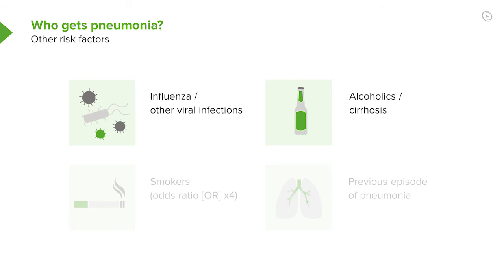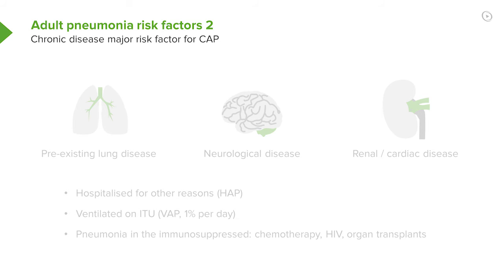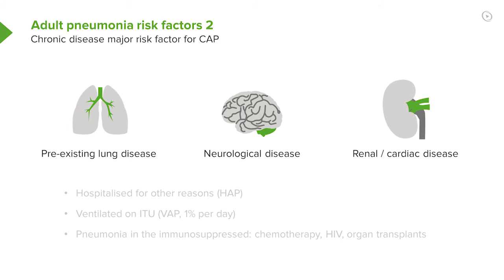Other people more susceptible to pneumonia include alcoholics or people with liver cirrhosis, because that affects the ability of the immune system to fight bacteria. Smoking allows bacteria to establish infection in the lungs more readily. Having had one episode of pneumonia makes you two or three times more likely to have another episode — it marks you out as somebody susceptible. Patients with chronic lung disease such as COPD, chronic neurological disease, dementia, previous stroke, renal impairment, or cardiac failure all have an increased chance of getting community-acquired pneumonia.